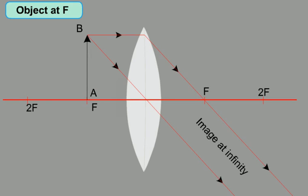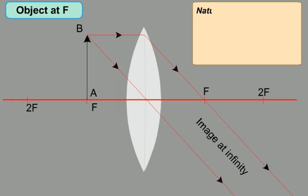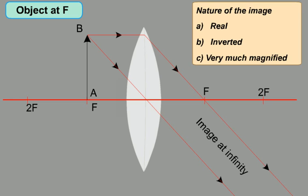Now, when the object is placed at F — when an object AB is placed at F, or the principal focus, the image will be formed at infinity on the other side of the lens. The image will be real, inverted, and very much magnified.